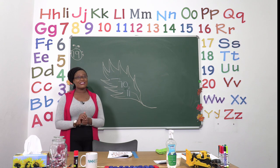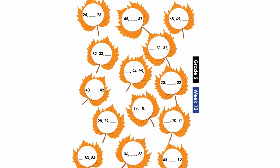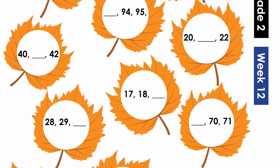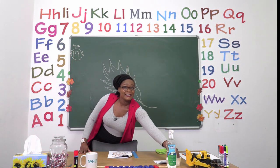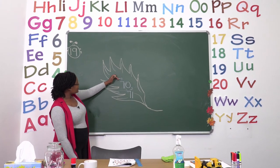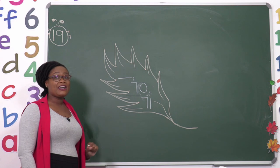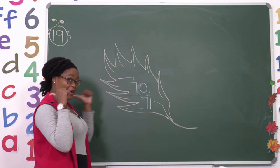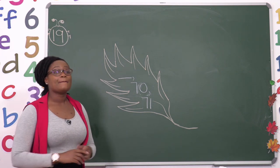Now for our final exercise, boys and girls, let's turn to page 19. On page 19 we are going to be filling in missing numbers. This is so easy peasy, and because it's so easy I'm only going to help you with one leaf. The leaf I'm going to help you with is at the bottom and it says dash 70, 71. Can you find that leaf? Well done — that is the one I'm going to help you with. So let's take a look at the board. I have my leaf here that says dash 70, 71, and we are going to try and find the missing number.